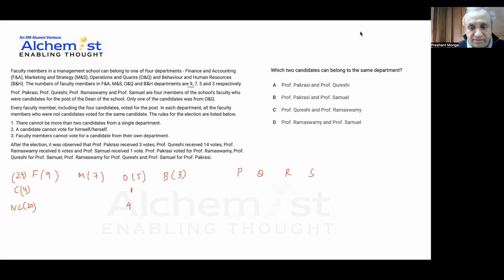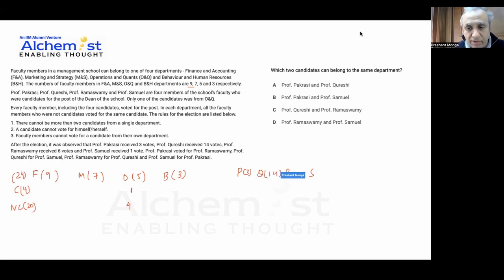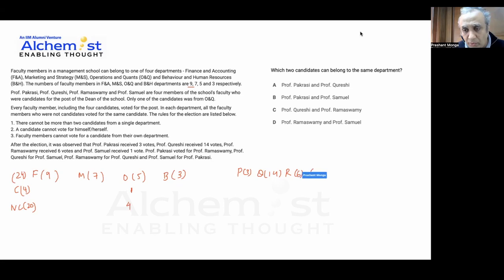After the election, Professor Prakashi received three votes, Kurishi got 14 votes, Ramaswami gets six votes, and Samuel got one vote. These are the total number of votes received by each candidate.